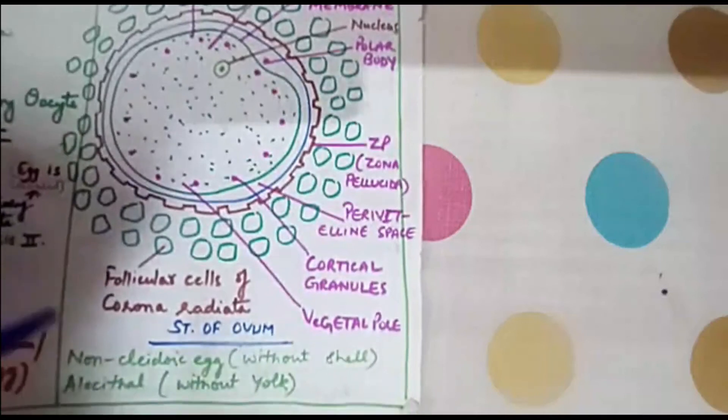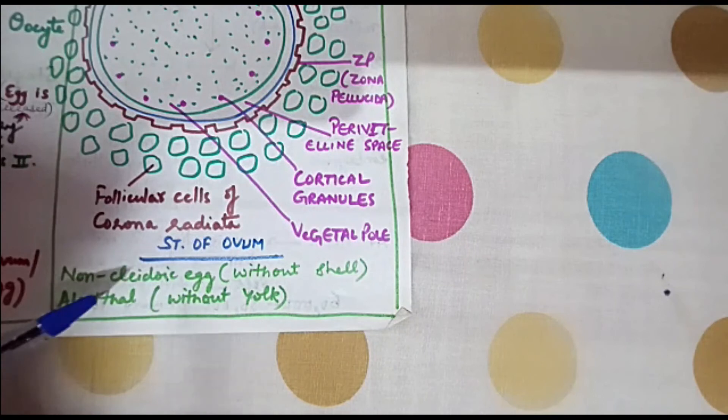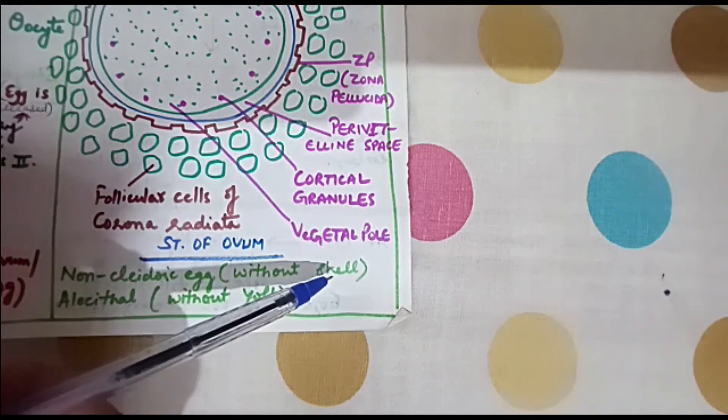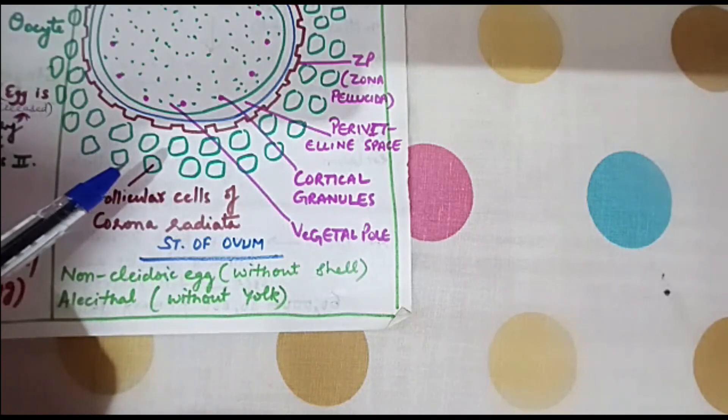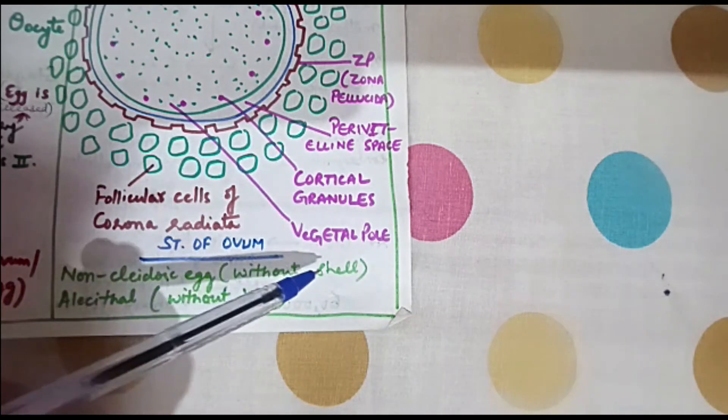Moreover, the human egg is non-cleidoic egg. Non-cleidoic egg is an egg without any shell. So we cannot see any shell in the structure of ovum or human egg. That means that the human egg is non-cleidoic, without any shell.